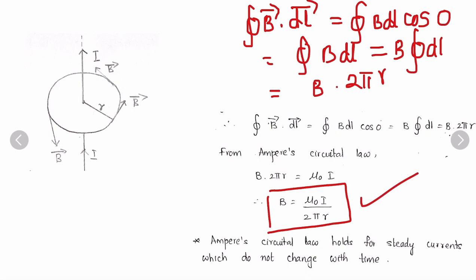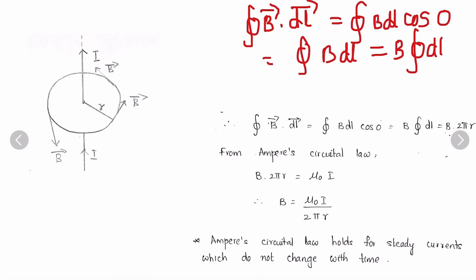We have applied Ampere's circular law to a long straight wire and obtained the result B = μ₀I / 2πR. This Ampere's circular law holds for steady currents which do not change with time. This is the application of Ampere's circular law for a long straight wire. This formula is very important for numerical problems and very easy to use. Thank you for watching this video. We will meet next time with another topic. Until then, bye. God bless you all.